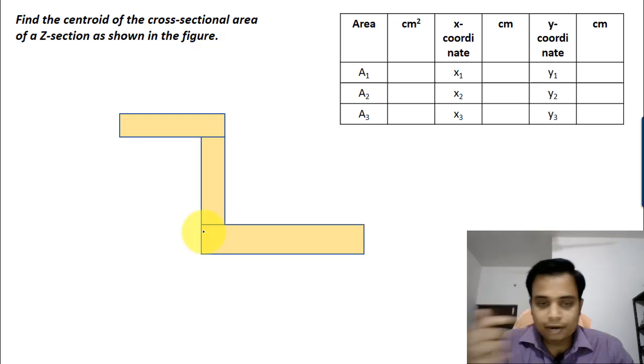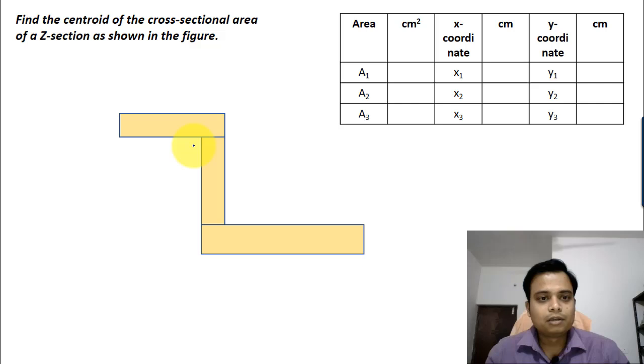You can clearly see that this Z-section is essentially a combination of three rectangles. Well, two of them horizontal and one vertical, which in fact is sandwiched between the two.